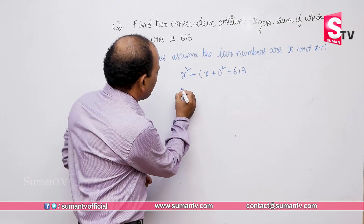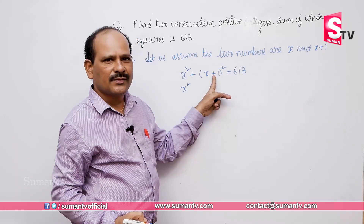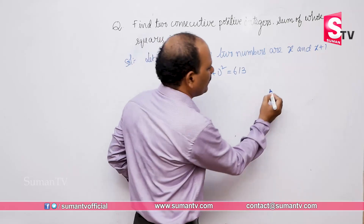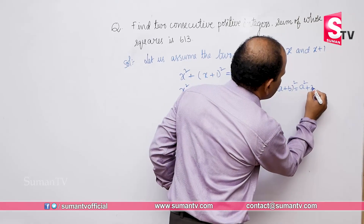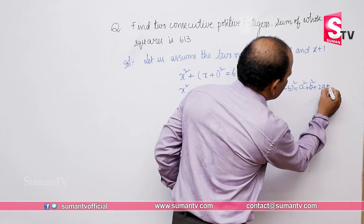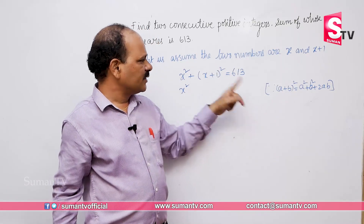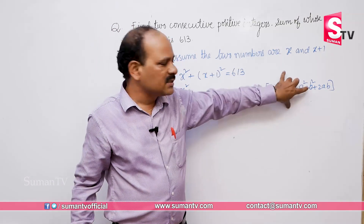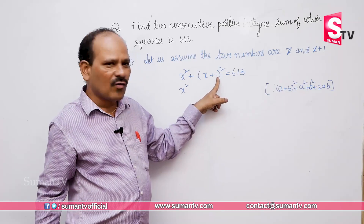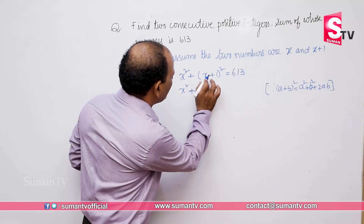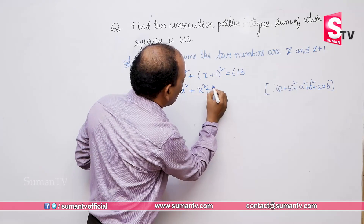Now simplify this. X plus 1 whole square I have to expand using the formula: a plus b whole square equals a square plus b square plus 2ab. Here X plus 1 is in the form of a plus b whole square, so I am expanding accordingly — X is a, and 1 is b.